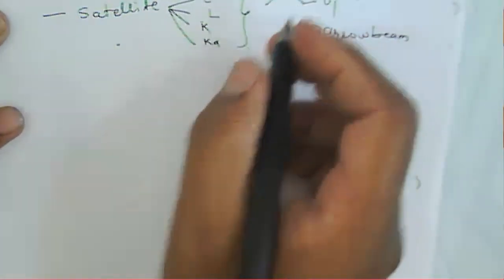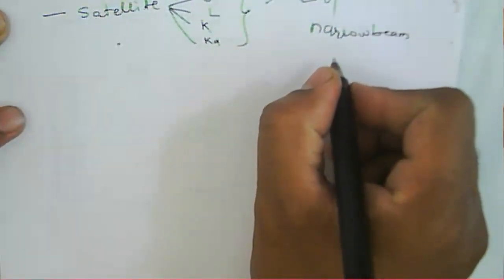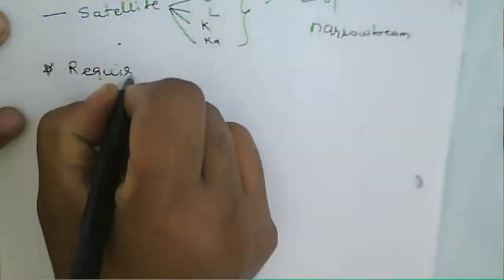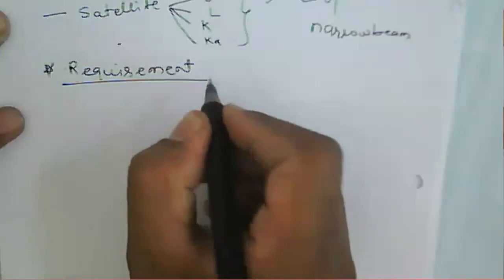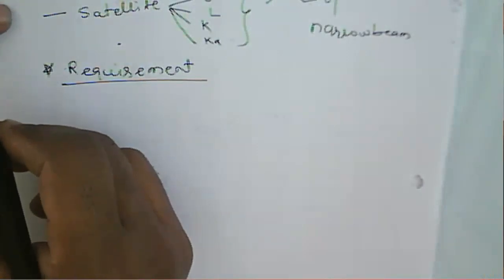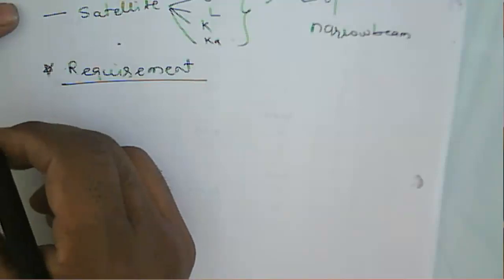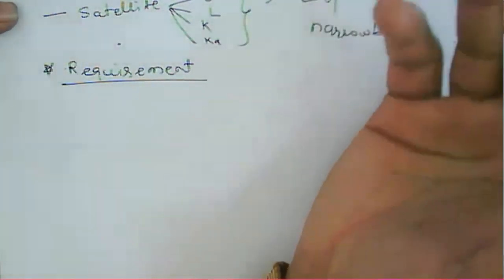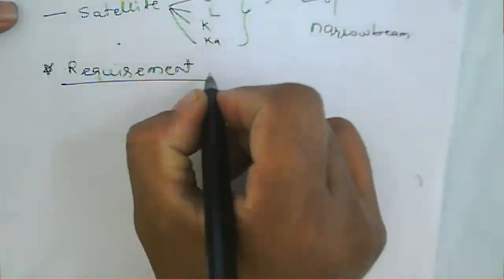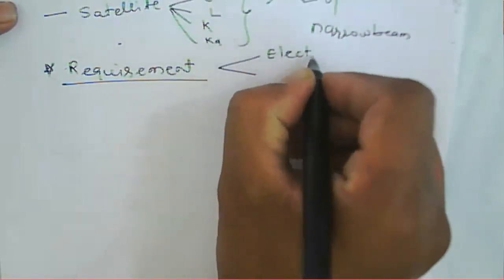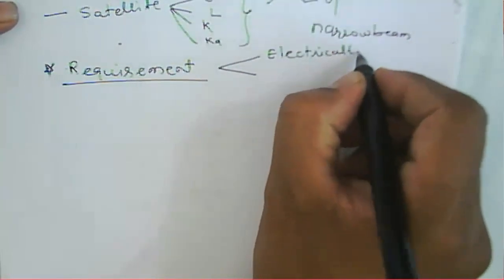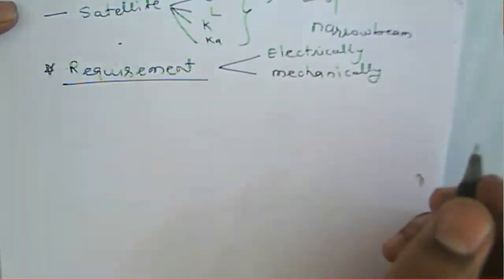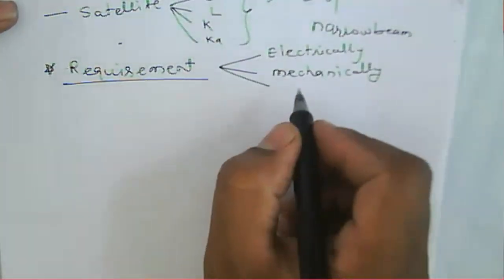We will cover the topic of the radiation pattern of an antenna and define the various antenna parameters one by one. Before that, we need to learn what the various requirements are when selecting an antenna. The requirements are either electrical — such as beam width, bandwidth, radiation pattern, and VSWR — or mechanical, such as whether the antenna is steerable and its weight. There are also environmental requirements.